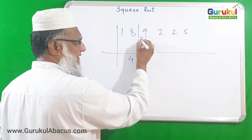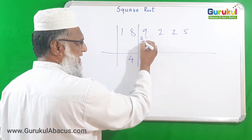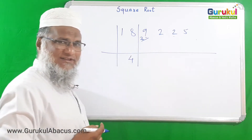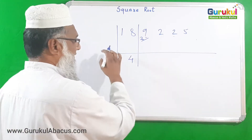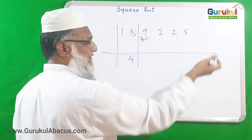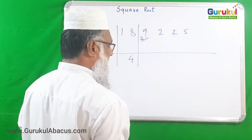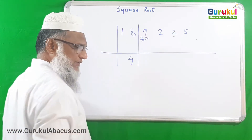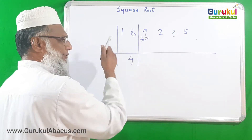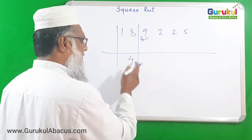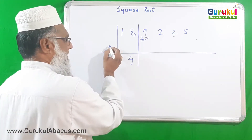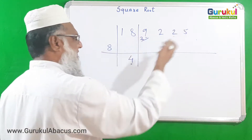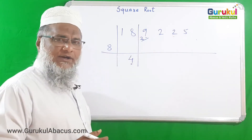I subtract 16 from 18, getting remainder 2. That 2 is brought down with the next digit 9, giving 29 for further processing. The first digit of the answer is 4, and we double it — 4 doubled is 8 — which we write as our divisor for further division to find the square root.